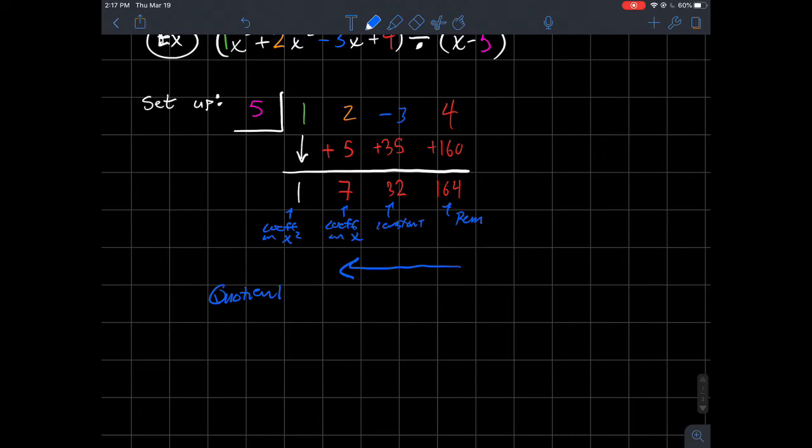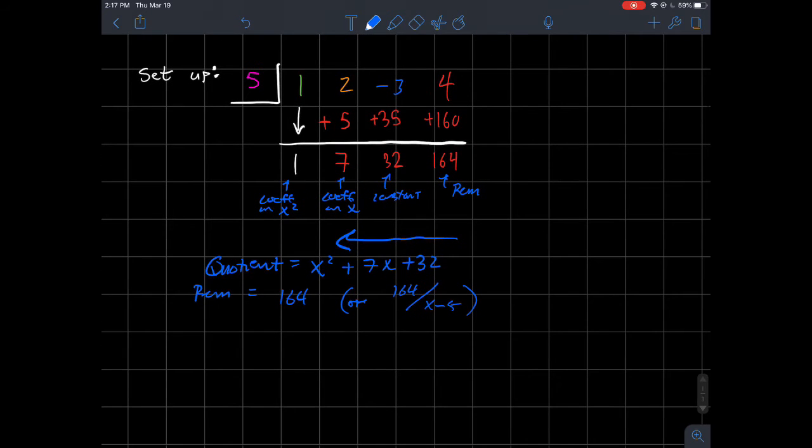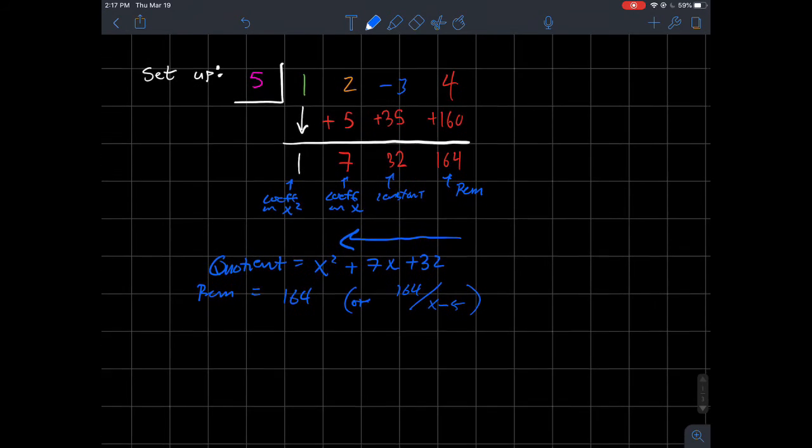So what you could write then is, the quotient is equal to 1x squared plus 7x plus 32. And then the remainder, you could write it as 164. And then I won't be picky, maybe on a written assignment or something, if you said 164, or if you told me 164 over what you divided by, so over x minus 5, either one of those. So that in a nutshell is how synthetic division works. So let's maybe do another example below.